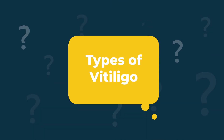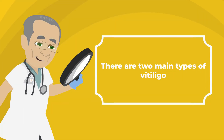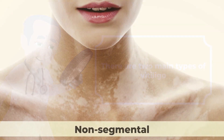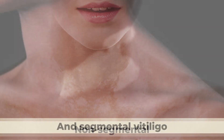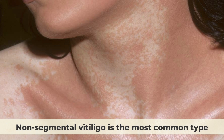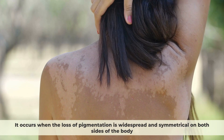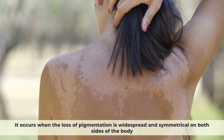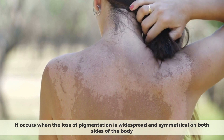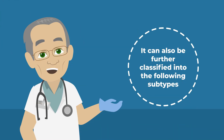Types of vitiligo: There are two main types of vitiligo — non-segmental and segmental vitiligo. Non-segmental vitiligo is the most common type and it occurs when the loss of pigmentation is widespread and symmetrical on both sides of the body. It can also be further classified into the following subtypes.